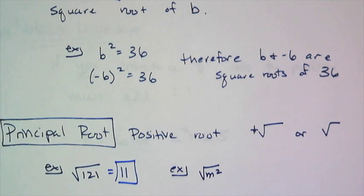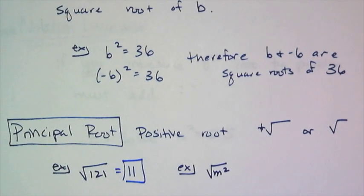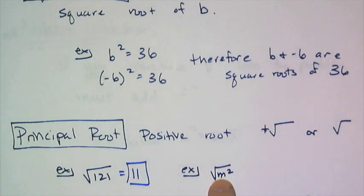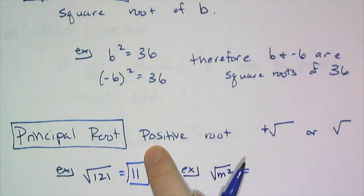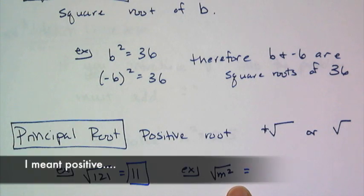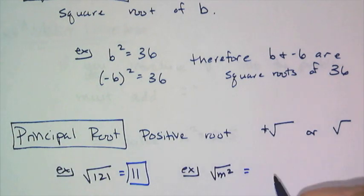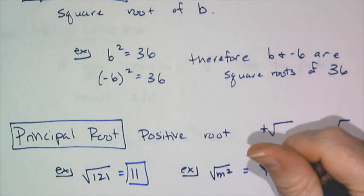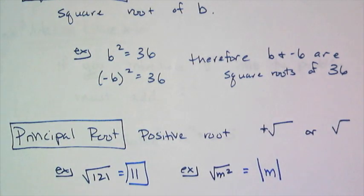Now one thing we have to be super careful with is when you see a variable underneath the square root, this is not just an m. Because I'm asking for the positive root, I have to make sure that when I square root this quantity, I get a positive number out. And if m were like negative 3 and I just wrote m there, that's actually not true. So when I put a variable underneath the radical and ask you to take the square root of it, it has to have absolute value symbols around it.